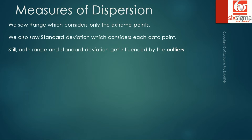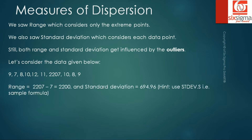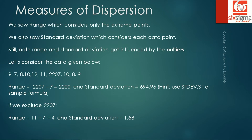Let's continue to build on our example from the previous video on measures of dispersion. We can easily compute range and standard deviation using the formula. Now if we exclude the outlier element of 2207, we see a huge difference in the values. A range which was reported as 2200 comes down to 4, and a standard deviation which was computed as 694.96 comes down to 1.58. Therefore, both range and standard deviation get influenced by the presence of outliers.